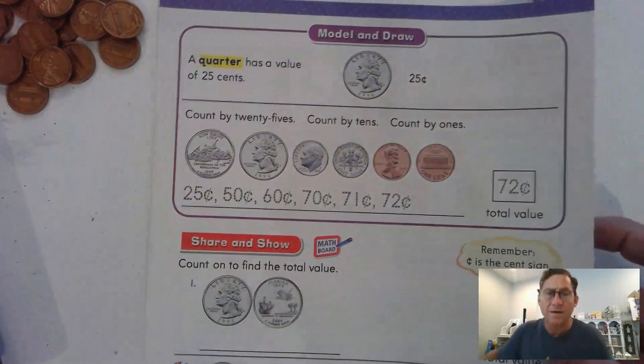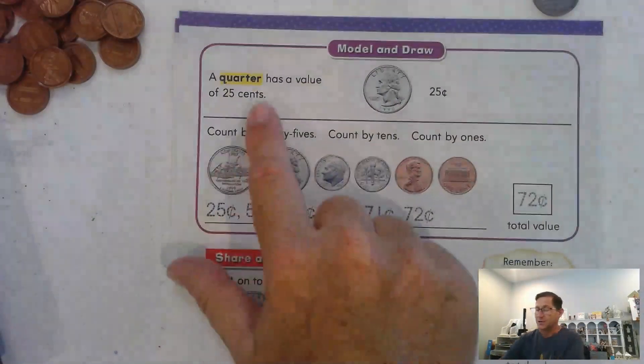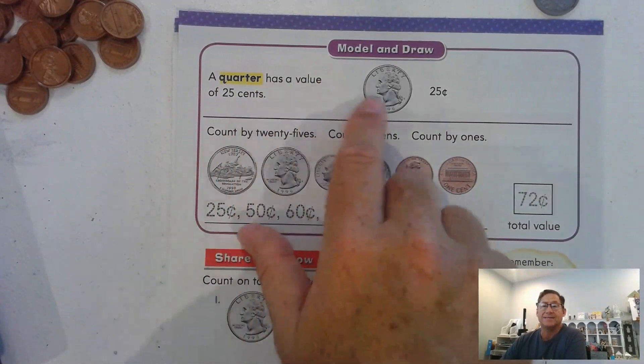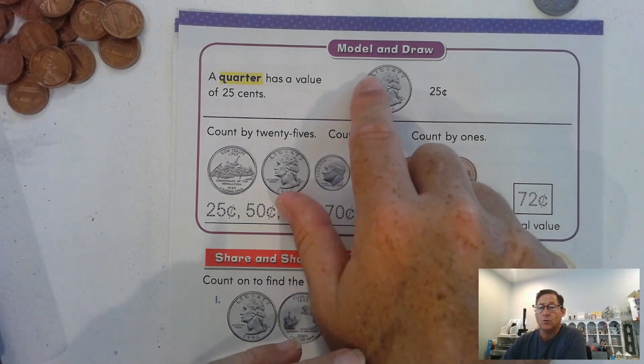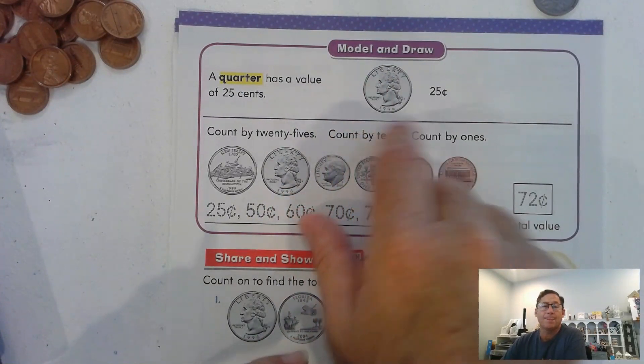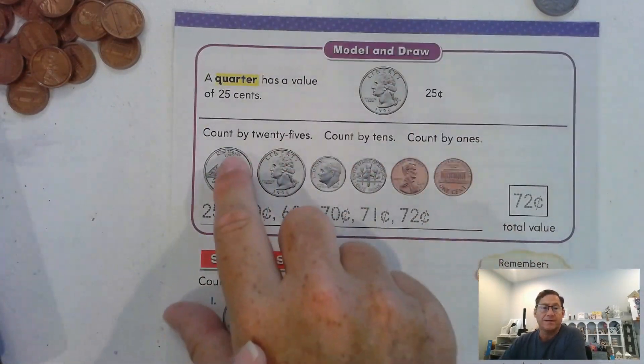Let's look at page 334. As we just discussed, a quarter has a value of 25 cents, and it looks like this. Every state in the United States has its own quarter, but they're all still worth 25 cents.